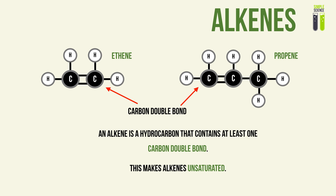What makes an alkane different from an alkene? It is the carbon double bond. An alkene is a hydrocarbon that contains at least one of these double bonds. This double bond makes the alkene unsaturated — in other words, it can undergo further reactions as a result of those double bonds.